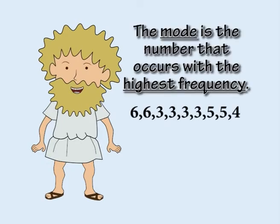The mode is the number that occurs with the highest frequency in a list of numbers. To determine the mode, first count up how many times each number occurs. The number that occurs the most is the mode.